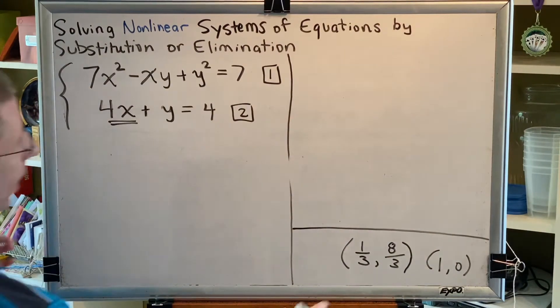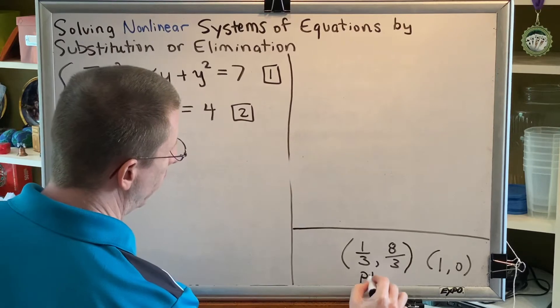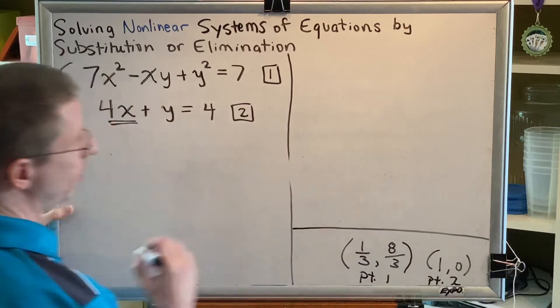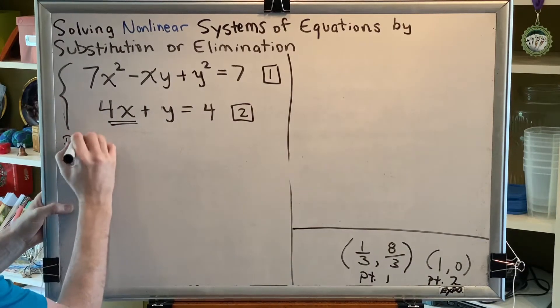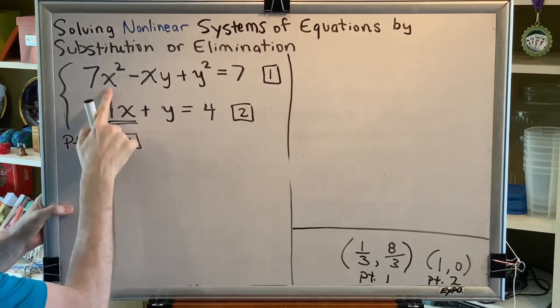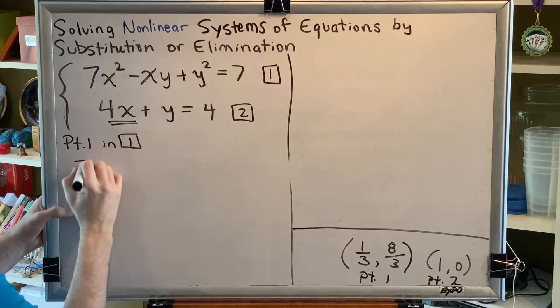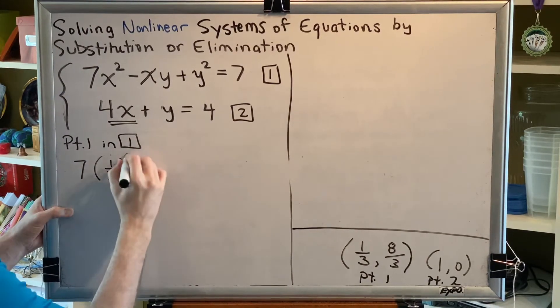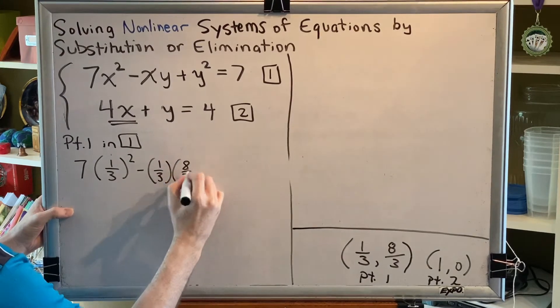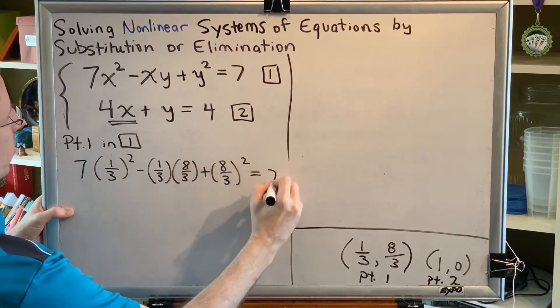Let's start by plugging in point one into equation one. Let's label these point one and two to make this video just a little bit easier to follow. We're going to put point one in equation one. So everywhere we see an X we'll put one-third, everywhere we see a Y we'll put eight-thirds. Seven times one-third squared minus one-third times eight-thirds plus eight-thirds squared equals seven.